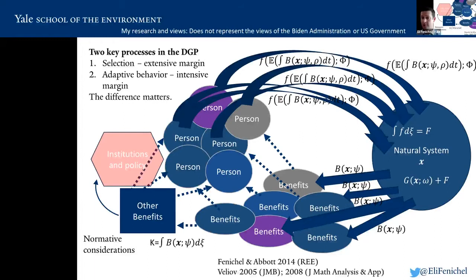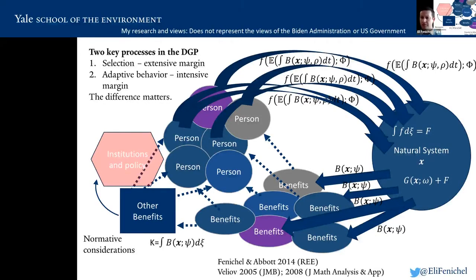There are two key features driving the data-generating process we need to be careful of in this micro-macro-and-back-again phenomenon. One is selection on who's being affected — it might look like everyone's changing behavior on average, but maybe only the elderly are, or maybe the epidemic is passing through different subsets of the population in sequence. On the other hand, we could have everybody making small changes that aggregate up to big changes — that's an intensive margin problem. Which pathway is operating really matters, not just for short-term forecasting, but for thinking about how policy designed to alter behavior will work.